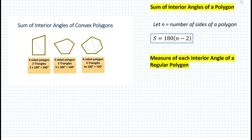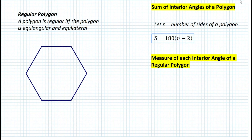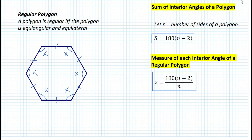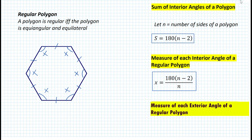Let's say we want to find the measure of each interior angle of a regular polygon. A polygon is regular if and only if the polygon is equiangular and equilateral — basically, all the sides are congruent and all the angles are congruent. In this case, we can find the measure of each interior angle by dividing the sum of the interior angles by the number of sides. If we call each angle x, then x is equal to 180 times (n minus 2) divided by n.